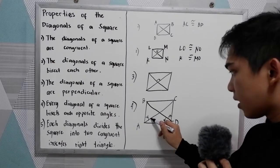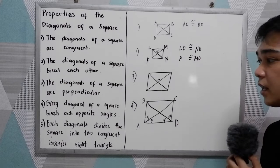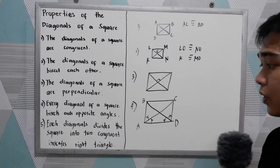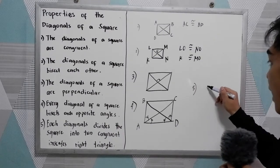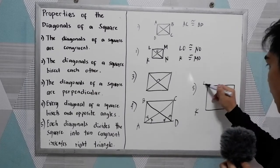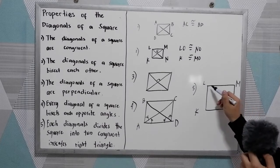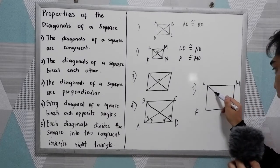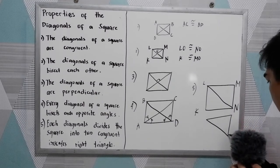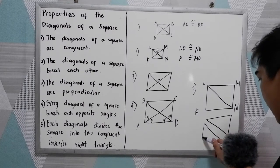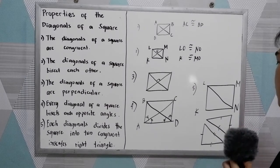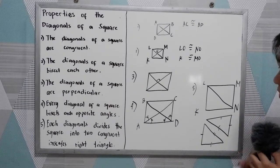And each diagonal divides the square into two congruent isosceles triangles. So number five, K, L, M, N. So if I will draw diagonal LN, therefore it divides into two congruent isosceles triangles. Isosceles triangle, that means the legs are equal.